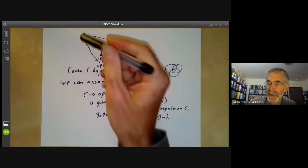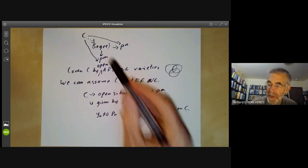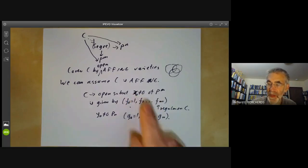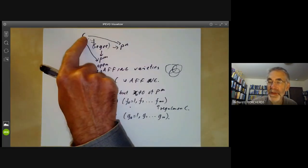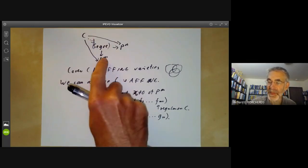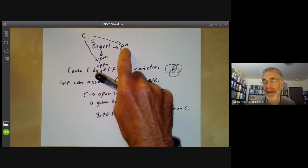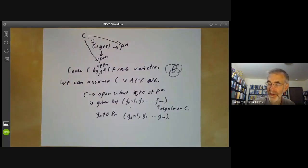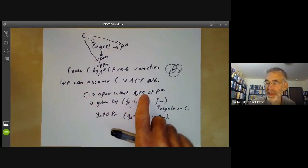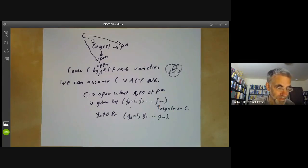So, well, in general, an affine variety C won't map to the open subset X naught not equal zero of P to the M. But what we can do is we can cover C by a lot of smaller open subsets where each of these open subsets maps to one of the standard open subsets of P to the M and one of the open subsets of P to the N, and we can then just glue these all together. So we may as well assume that not only C is affine, but that its image is in the open subset X naught not equal zero of P to the M and similarly for P to the N.